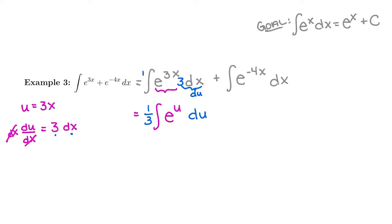But to balance out the 3 that I put on the inside, I'm going to put a one-third outside. So I have one-third e to the u du for that first piece. Now I'm going to integrate it. I'm going to get one-third e to the u, right?